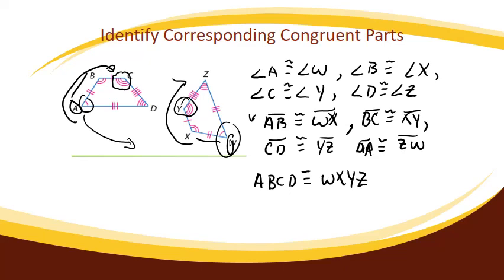All right, identifying corresponding congruent parts. We shall look at one more that's labeled a little bit differently, but we're going to use the same procedure. We're going to determine what our rotation is, and then we're going to make a decision. How am I going to describe this? Am I going to move clockwise or counterclockwise?